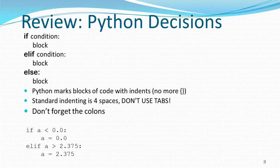Here is what we're going to do with our terms. If A is less than 0.0 — we're using floating point values, so we want floating point constants — then A equals 0.0. That makes sure we don't have any negative numbers. Else if A is greater than 2.375, then A equals 2.375, and that will be our upper limit.